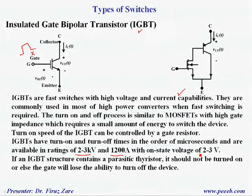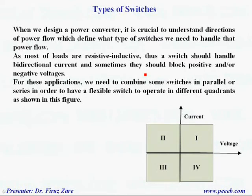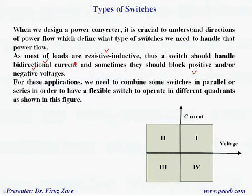When we design a power converter, it is quite important to understand the directions of power flow, which define what type of switches we need to handle that power flow. As most loads are resistive-inductive, a switch should handle bidirectional current, and sometimes it has to block positive and/or negative voltage. For these applications, we need to combine switches in parallel and/or series to have a flexible switch to operate in different quadrants.